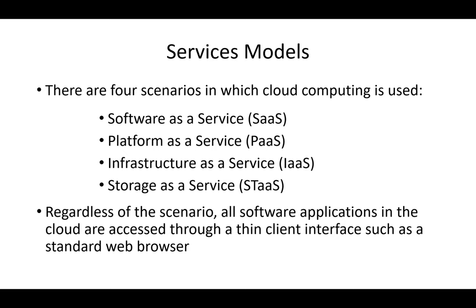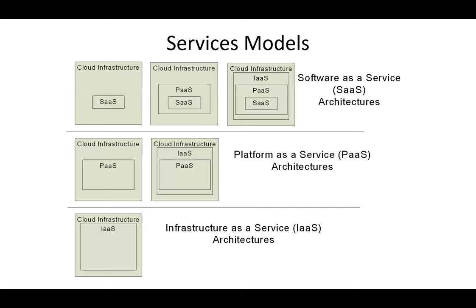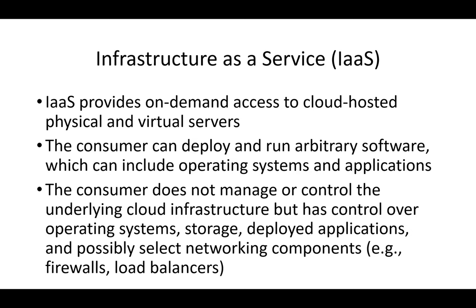There are four popular models for cloud services: Software as a Service (SaaS), Platform as a Service (PaaS), Infrastructure as a Service (IaaS), and Storage as a Service (StaaS). Each provides a different type of service. At the bottom is IaaS — just giving the machine. Building on that, PaaS provides infrastructure plus a platform. SaaS is all three: infrastructure, platform, and software.